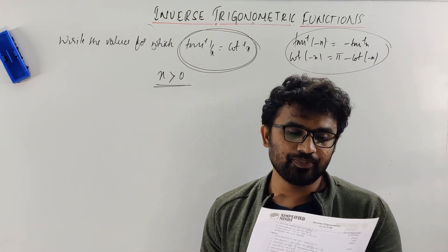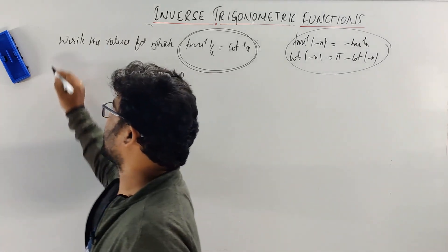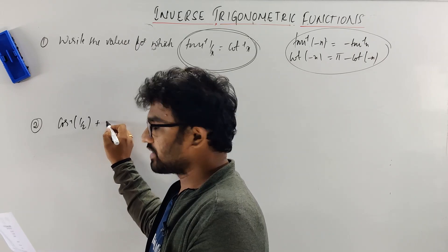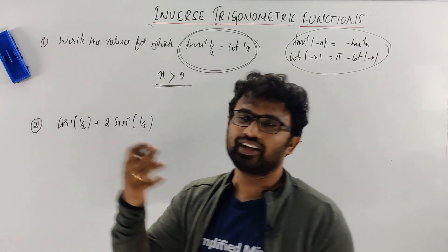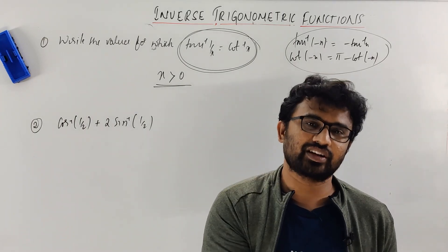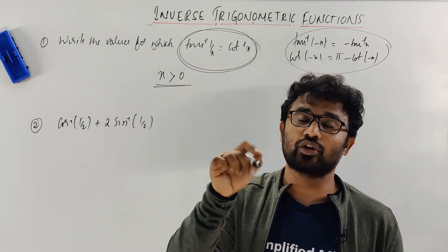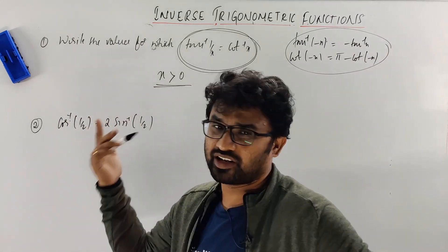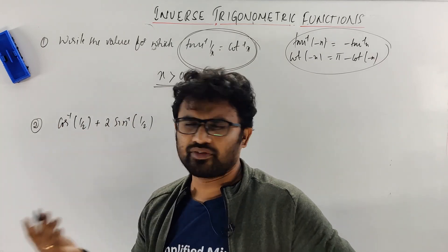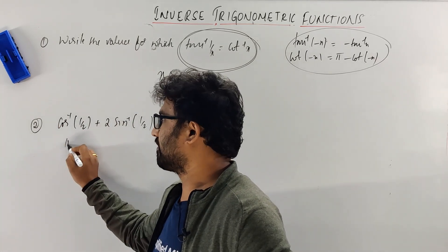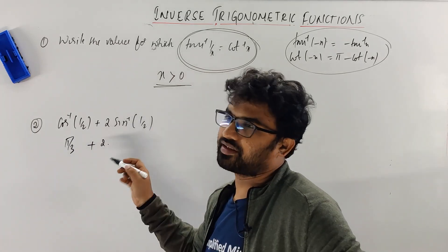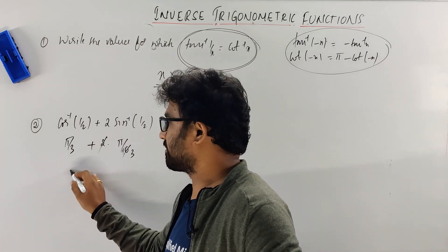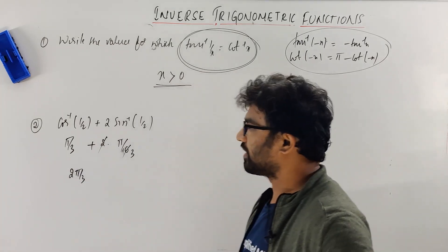Next: write the range and domain of all these functions. Questions can also come like this: cos⁻¹(1/2) + 2·sin⁻¹(1). Very simple. cos⁻¹(1/2) — it's positive, so directly: cos 60° = π/3. Then 2·sin⁻¹(1): sin 30° = π/6, so 2·(π/6) = π/3. Adding: π/3 + π/3 = 2π/3. Very simple question.